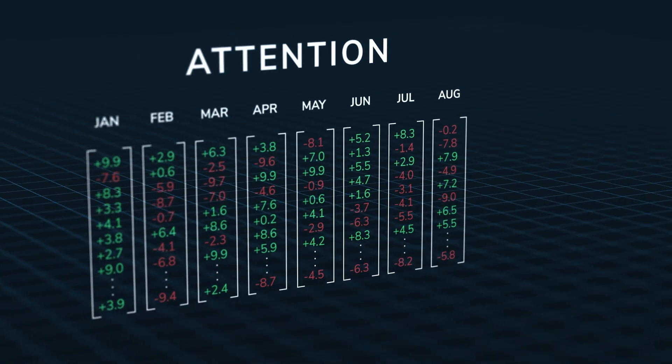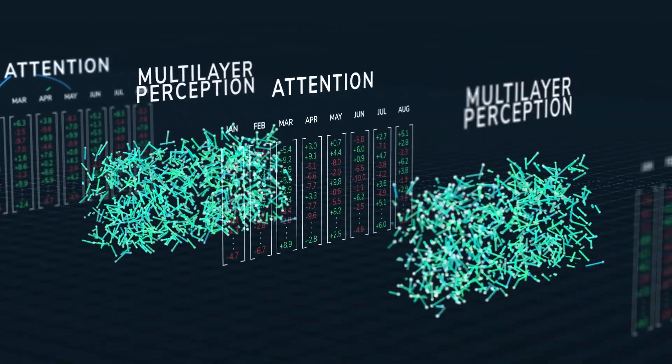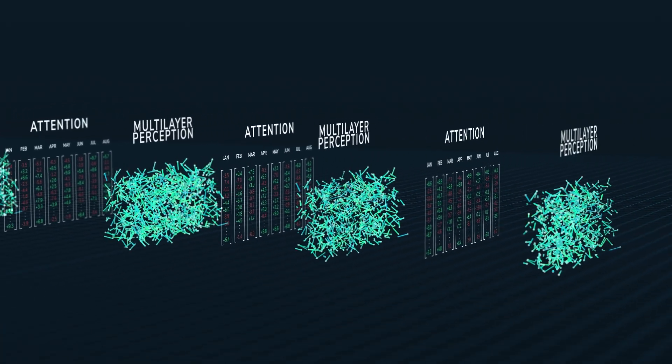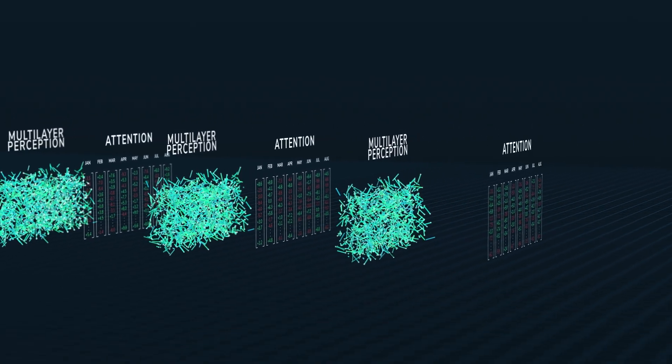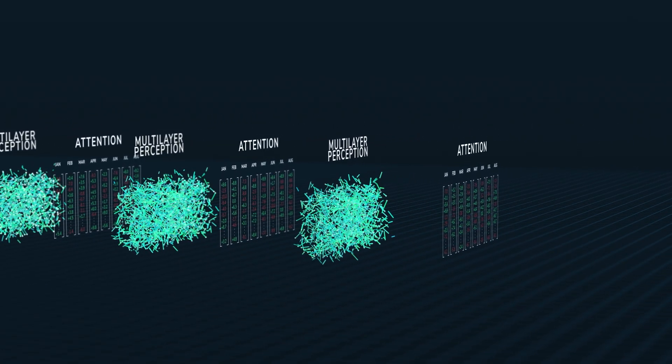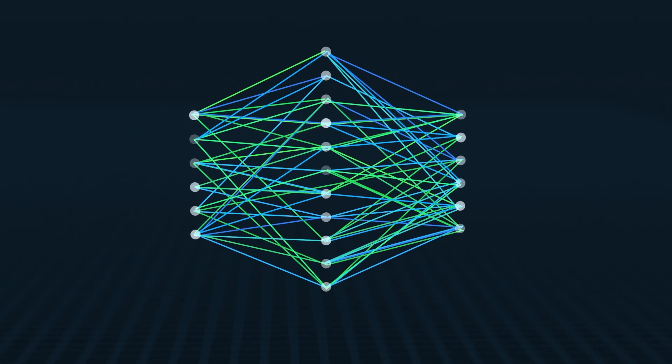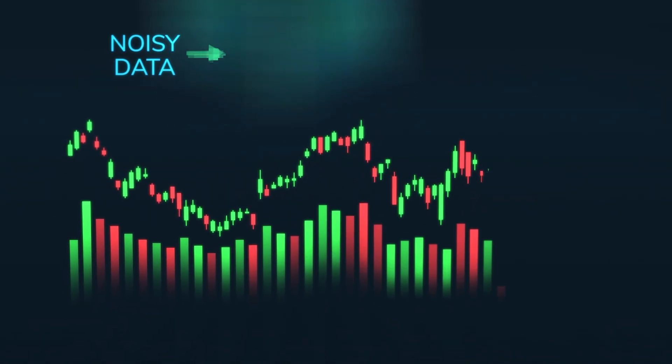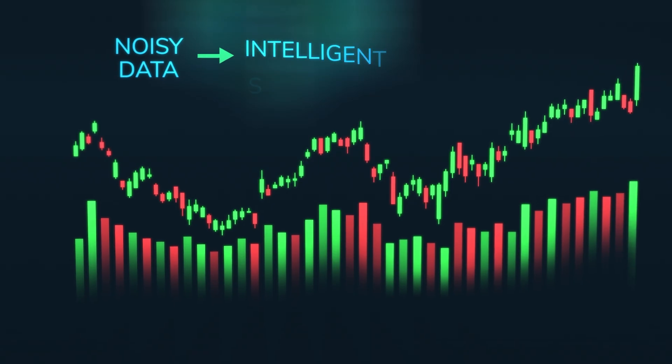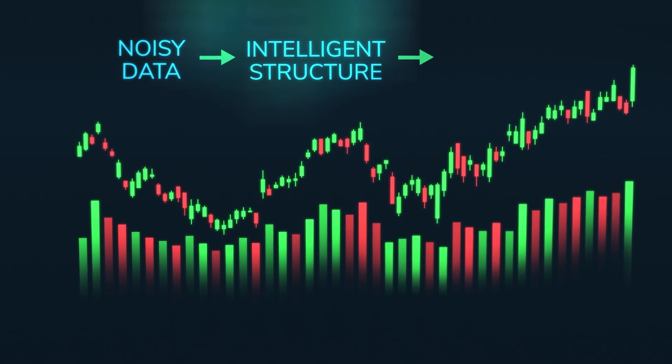The model doesn't rely on one indicator or one theory. It integrates hundreds of features, each a small piece of truth, then tests statistically whether those pieces, in combination and individually, create a measurable advantage. That's how we move beyond intuition and into quantifiable probability. We let the data tell its own story, and we listen with enough structure, discipline, and experience that we can measure whether that story is actually real.